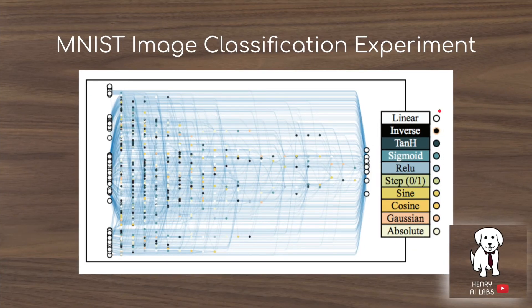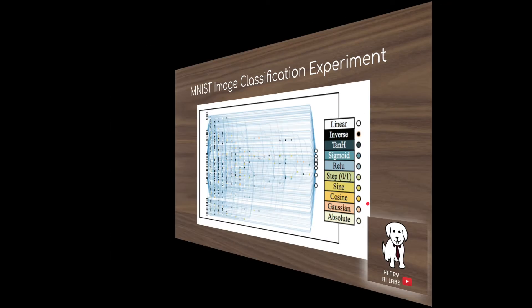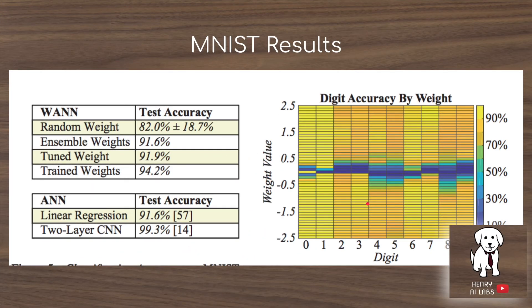This is an example of the MNIST image classification experiment using weight agnostic neural networks. They resize the MNIST dataset from 28×28 to 16×16, then flatten it and use the same algorithm to classify the digits. This results in accuracy scores using weight agnostic neural networks with different structural parameters.